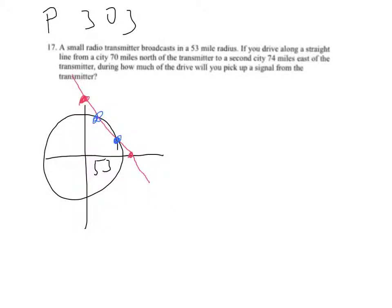Let's picture what's happening with this problem. We know that this is the point (0, 70) and this is the point (74, 0). That's where the transmitters are located.